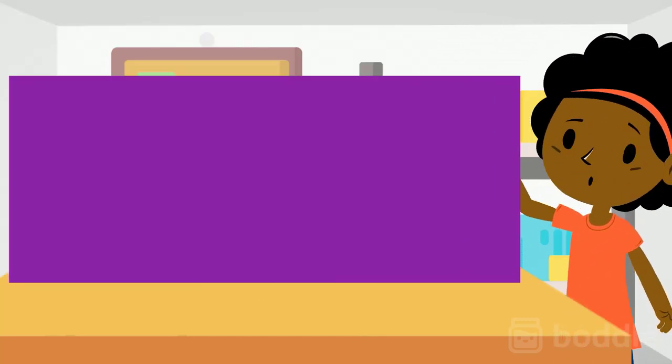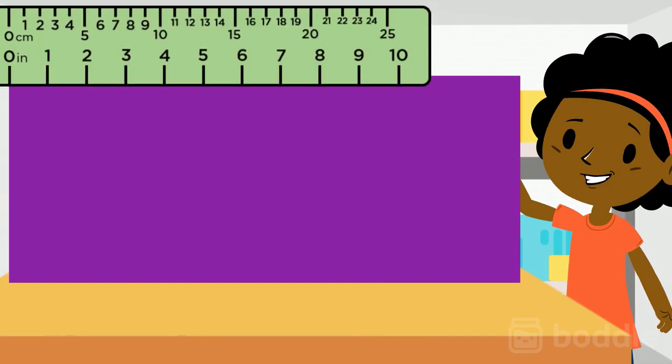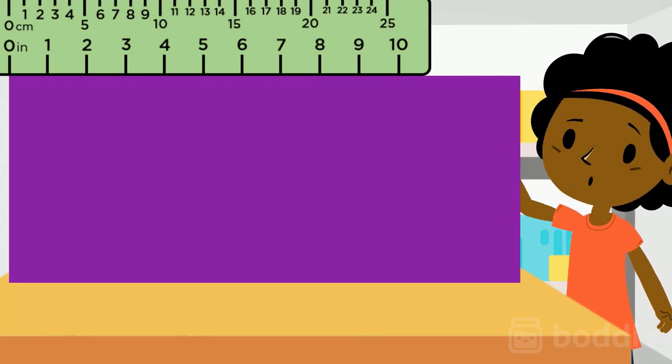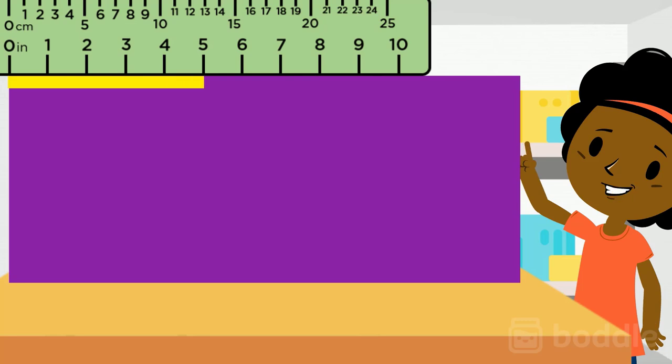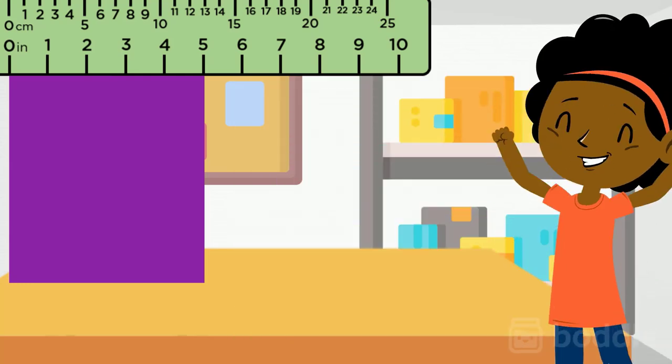Now we need a 5 inch piece of fabric for the blouse. Back to the ruler. Let's count: 1, 2, 3, 4, 5 inches. And cut the fabric. Awesome. Another check on the list, which leaves us with only one more piece of fabric.